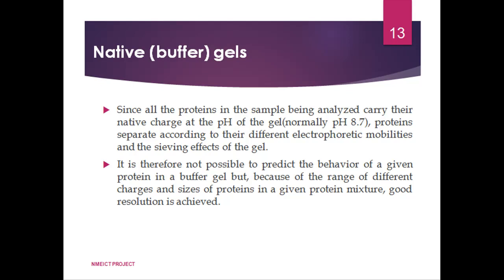An enzyme of interest can be identified by incubating the gel in an appropriate substrate solution such that a colored product is produced at the site of the enzyme. An alternative method is to include the substrate in an agarose gel poured over the polyacrylamide gel and allowed to set; diffusion and interaction of enzyme and substrate between the two gels results in color formation at the site of the enzyme. Often duplicate samples are run on the gel, which is then cut in half — one half stained for activity, the other for total protein — so that the particular band corresponding to the enzyme can be identified.